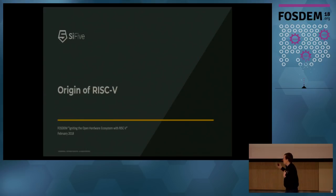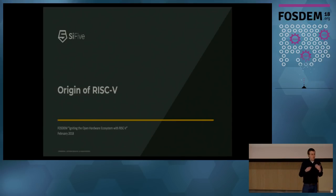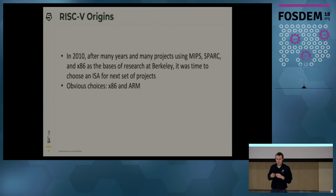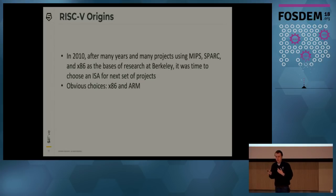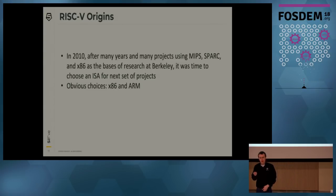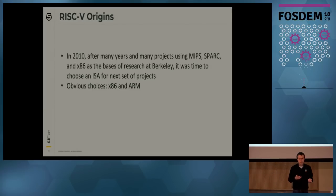Now I'm going to talk about the origin of RISC-V. We've been developing this ISA for about eight years. We were at Berkeley trying to do computer architecture research, and if you're going to build a processor, you need an ISA. We looked at the existing ISAs, and the only reasonable choices at the time were x86 and ARM — those were the two market leaders.